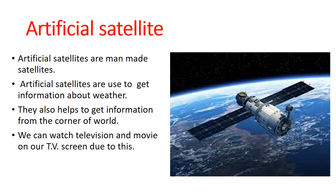Artificial satellites are man-made satellites. They are used to get information about weather and seasons. They also help to get information from every corner of the world. We can watch television and movies on our TV screen due to artificial satellites.